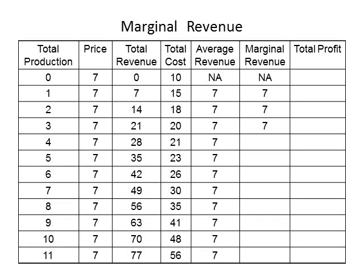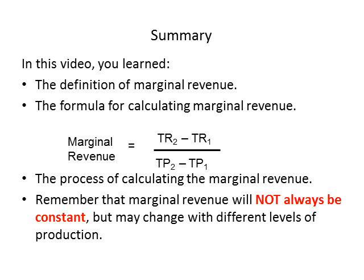Here is a table that includes the calculations just completed. Take some time to practice calculating marginal revenue by pausing the video and filling in the blanks with your answers. Here is the table showing the correct answers for marginal revenue. In this video, you learned the definition of marginal revenue and the formula for calculating it — the difference between two levels of total revenue divided by the difference in two levels of production. You also learned the process of calculating marginal revenue. One key thing to remember: marginal revenue will not always be constant but may change with different levels of production.